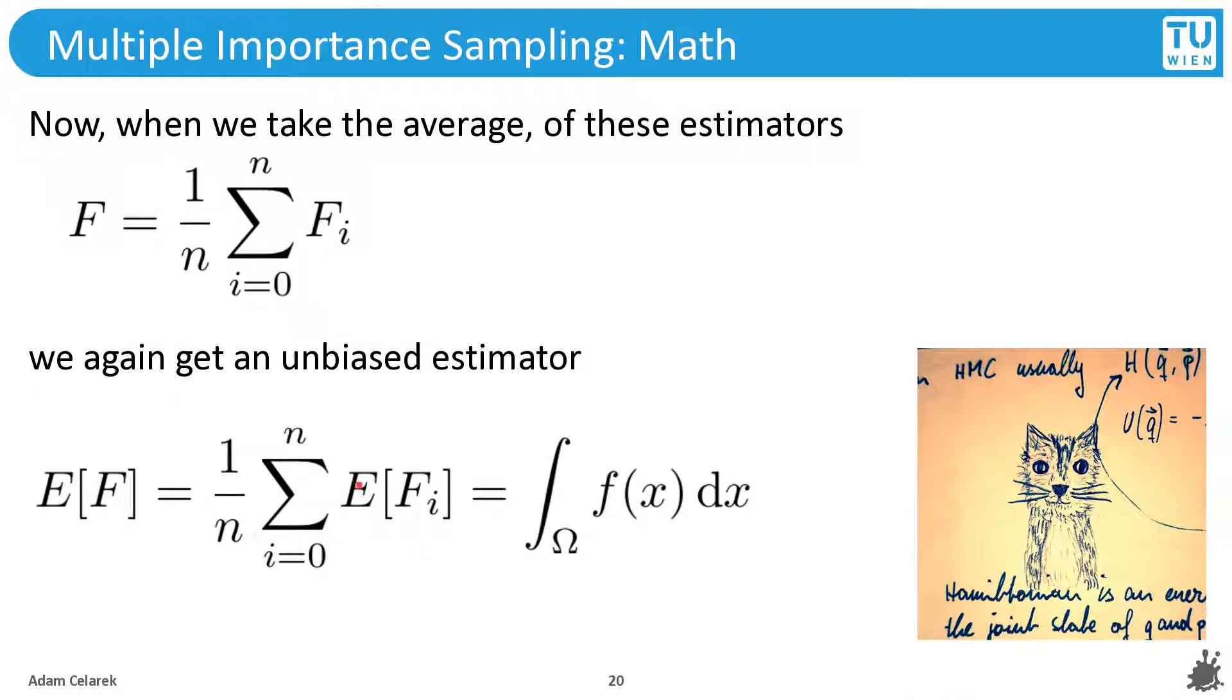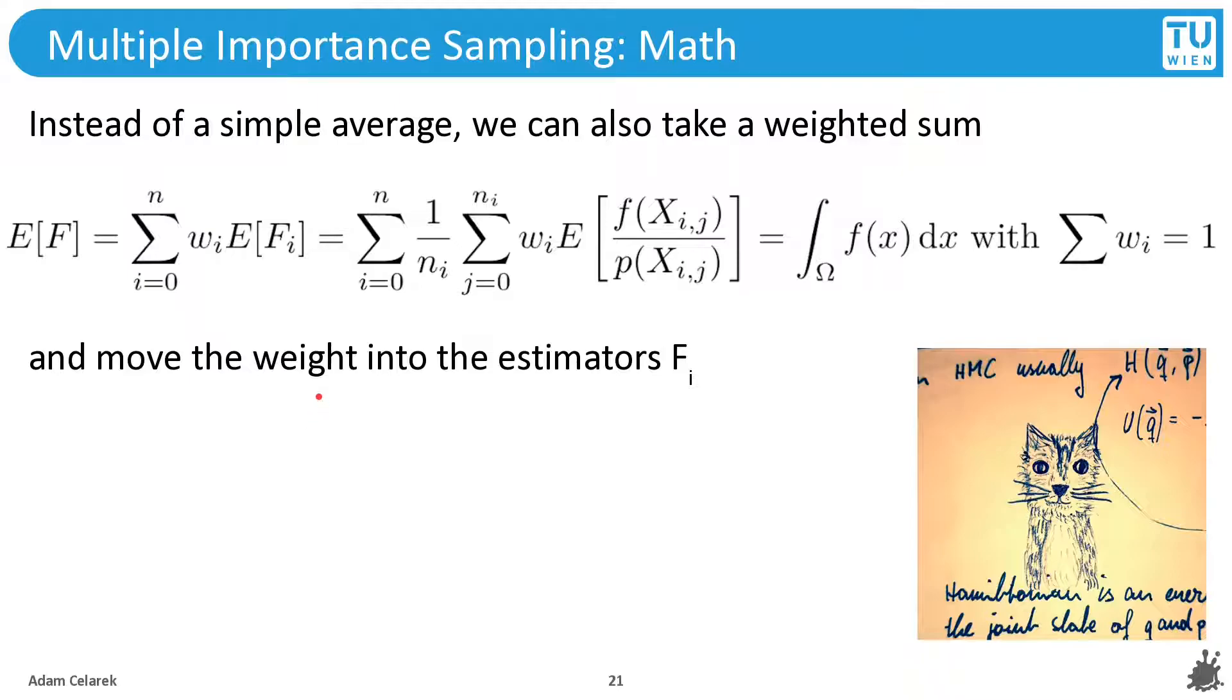So then a naive approach to combine those estimators would be to compute the average of them. And since each one of them is unbiased, the average is unbiased again. This is due to the linearity of the expectation operator. We can do a bit better by computing a weighted average. A weighted average, if it should stay unbiased, needs the weights to sum up to one.